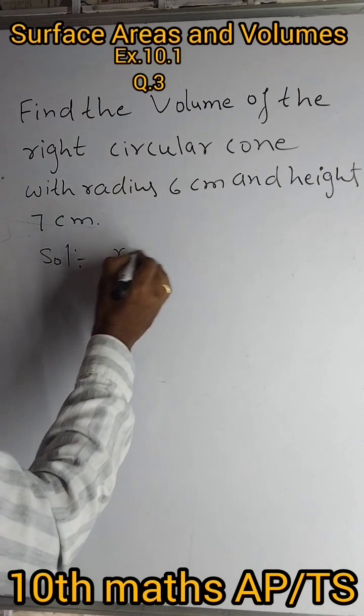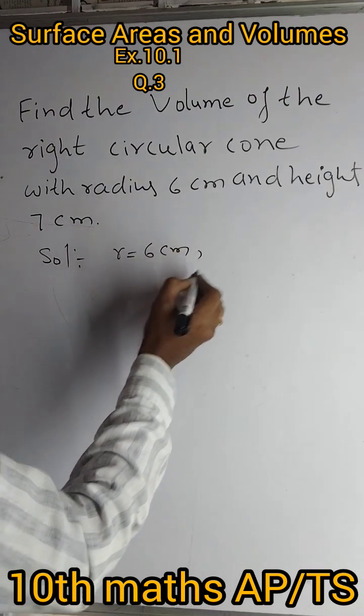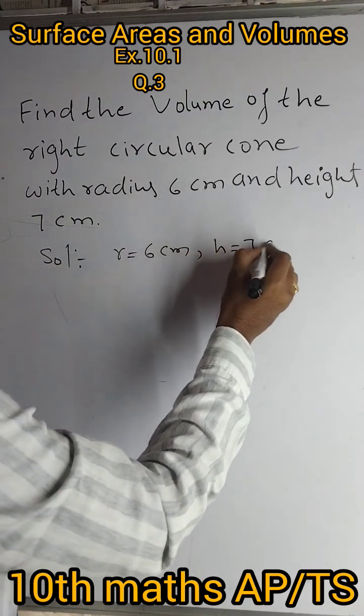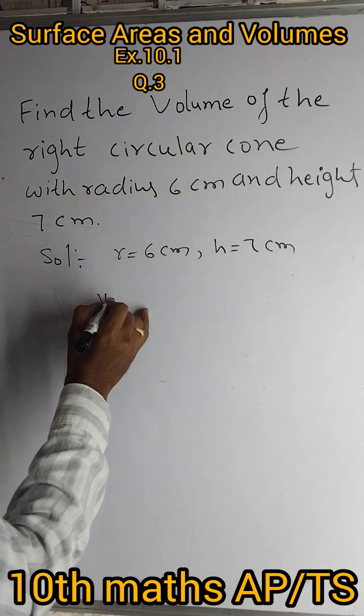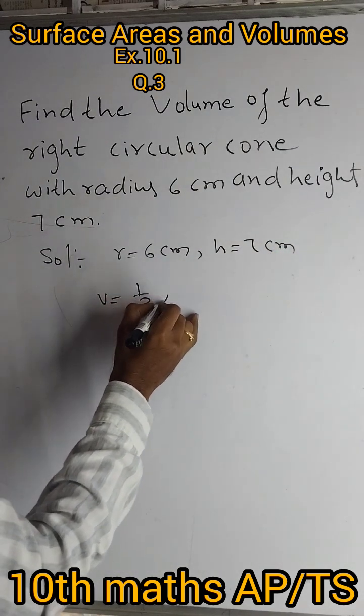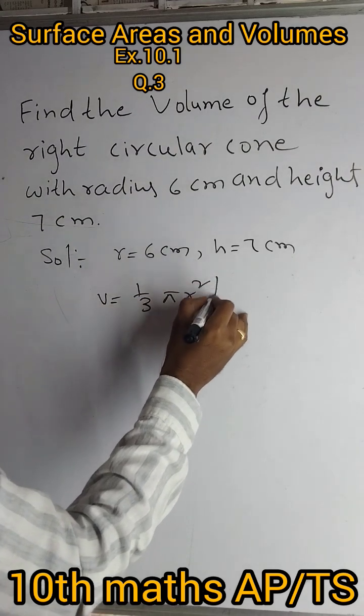In solution, radius r is given 6 cm and height h is given 7 cm. Volume of the cone formula is V equals 1 by 3 pi r squared h.